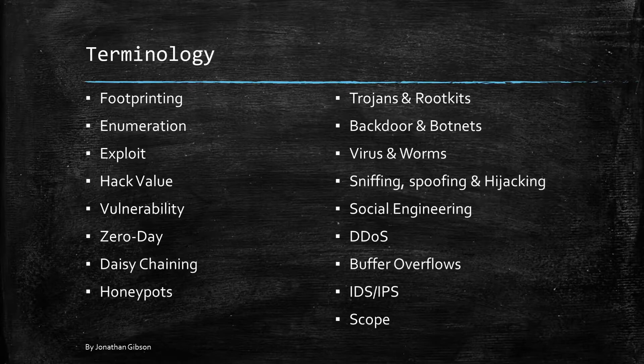Social engineering is the psychological manipulation of getting people to perform actions or divulge confidential information. DDoS, short for distributed denial of service, is a type of DoS attack where multiple compromised systems are used to target a single system, causing a denial of service attack.